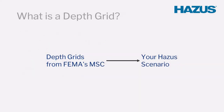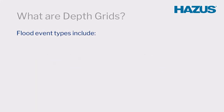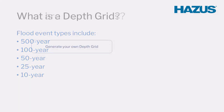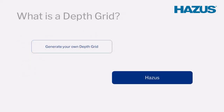Depth grids can be obtained from FEMA's MAP Service Center via the link in the video description, from a colleague, from an HPR of a previously created scenario, generated from other products, or from other outside sources. The depth grids from the FEMA MAP Service Center are ready for direct import into your scenario and often include the 500-year, 100-year, 50-year, 25-year, and 10-year flood events for your study region. If a depth grid for your study region is not available to download, you can generate your own outside of Hazus. More information on this process can be found in the How to Build a Depth Grid tutorial video.